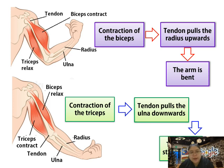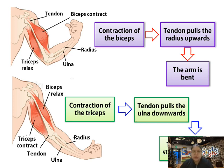Let's see the process when you are bending and when you are straightening. For bending: contraction of the bicep occurs, while the tricep is relaxing. The tendon pulls the radius upwards, and the arm becomes bent. For straightening: contraction of the tricep occurs, the tendon pulls the ulna downwards, and the arm becomes straightened. The radius is involved in bending, and the ulna in straightening. The contracting muscle does the work; the relaxing muscle does not.